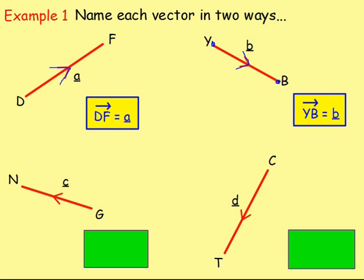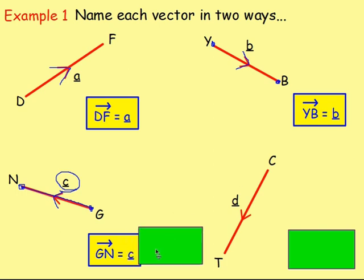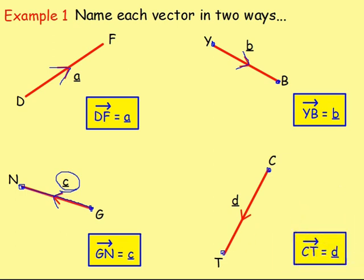This vector here — the arrow is pointing up towards N, which means it started at G and ended at N. So instead of NG, we would call it GN. We could also call it lowercase c underlined. And finally, this vector is going down from C to T, so it would be CT — or lowercase d underlined. CT happens to be Mr. Thomas' initials.